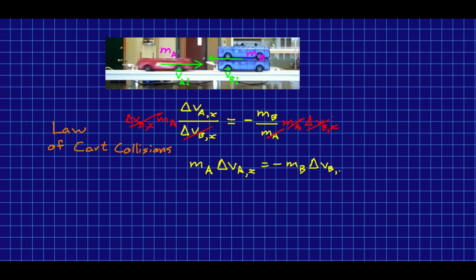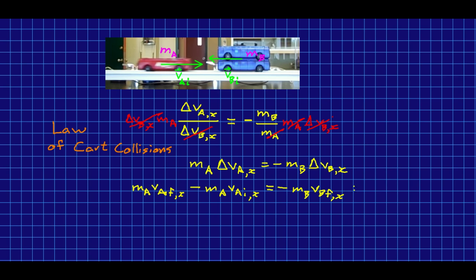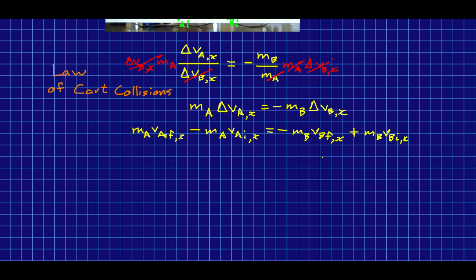The thing to notice is that now everything to do with cart A is collected on one side and everything to do with cart B is collected on the other side. The next thing I'm going to do is say my deltas have to be final minus initial, so I can replace them with final minus initial. I'm going to do that and multiply through by the m's. You might follow along doing the algebra yourself, pausing every now and then.